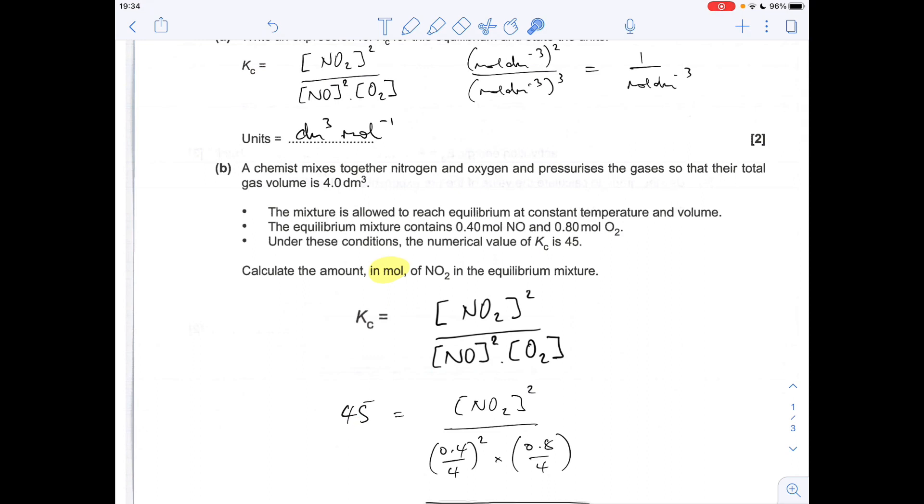I've rewritten the Kc expression and then I've subbed in the numbers that we know. So 45 is the Kc, the equilibrium concentration of NO is moles over the volume squared, multiplied by the moles of O₂ over the volume. What I'm going to do is take that over to this side, multiply by 45, and then get rid of that squared sign and make it square root.